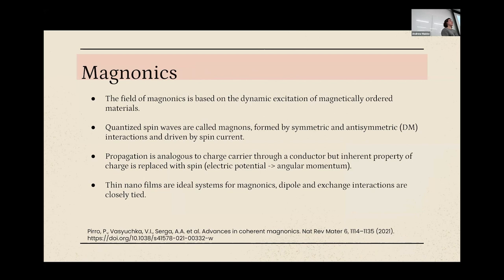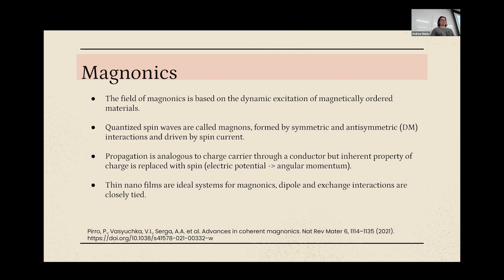Magnonics is based around spin waves, which is fascinating because you eliminate the inherent property of charge and focus solely on spin to convey energy. The field of magnonics is based on the dynamic excitation of magnetically ordered materials — i.e., spin — and the quantized spin waves are called magnons, which are formed by different interactions between symmetric and anti-symmetric forces. Propagation is analogous to charge carriers through a conductor, but you're looking at angular momentum rather than electric potential. Thin nanofilms are ideal systems for magnonics research.